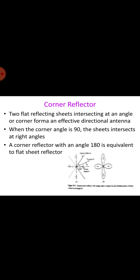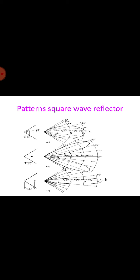A corner reflector with alpha equal to 180 degrees is equivalent to the flat sheet reflector and may be considered as a limiting case. Assuming perfectly conducting reflecting sheets of infinite extent, the method of images can also be applied to analyze the corner reflector antenna of angles alpha equal to 180 by n, where n is any positive integer.